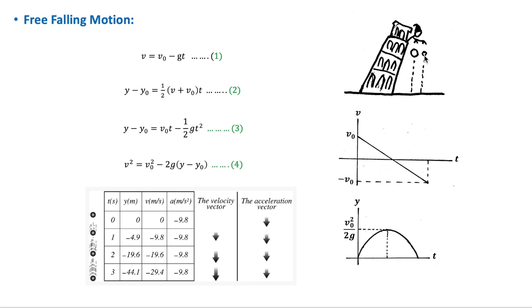These two objects would hit the ground at the same time. The acceleration is denoted by g and is known as the free fall acceleration, because air resistance is neglected and the object is assumed to be moving freely under gravity alone. The direction of the vector g is downward, towards the center of the Earth.